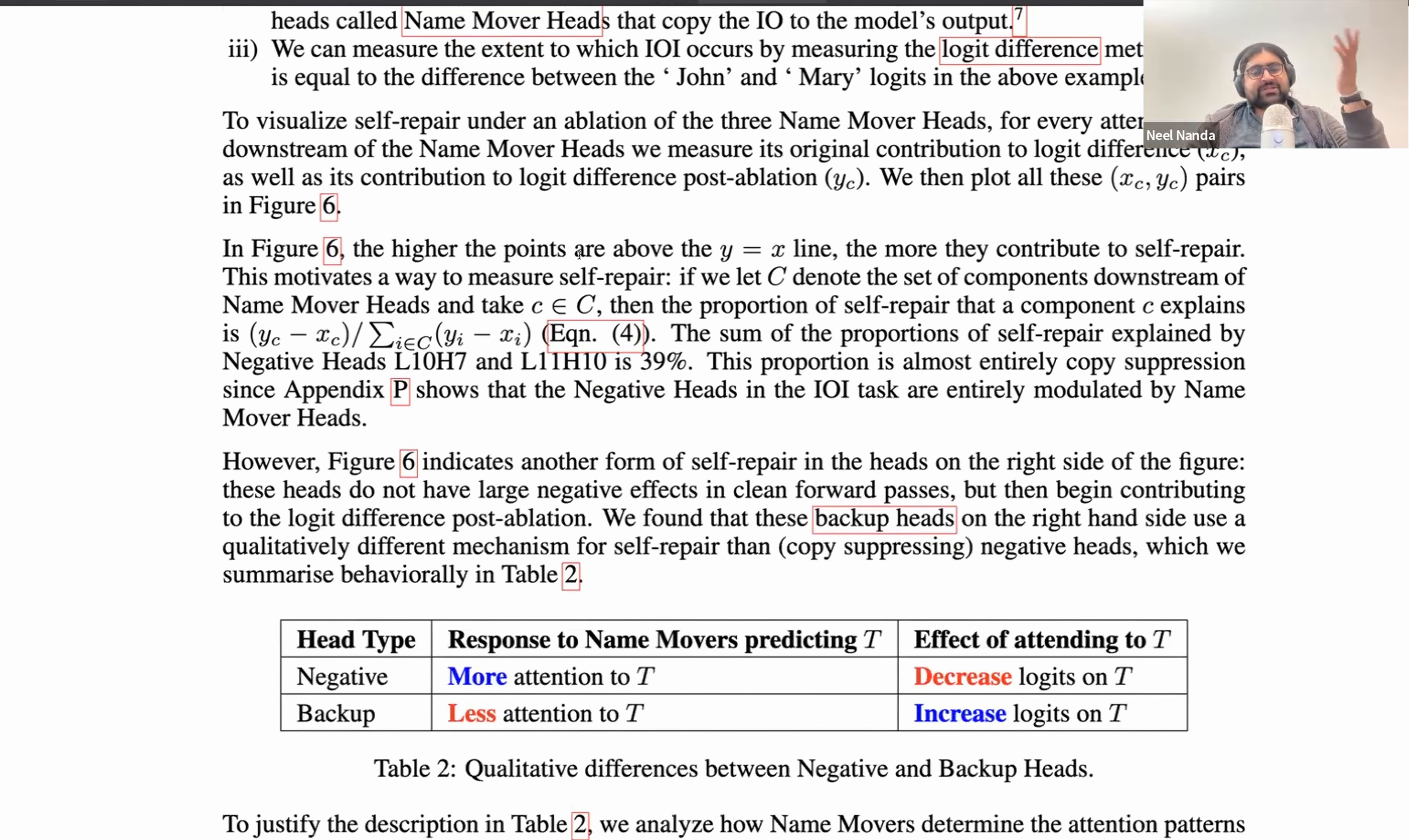Maybe let's disentangle that into two separate claims. The first is more of a behavioral claim. If you delete a name mover head and look at the total change on the output, it's not that big. Well, if you look at the direct effect of the head you deleted on the output, it is big. This is surprising. We can look at the direct effect because transformers have skip connections that skip layers. So you can just be like, if we just keep skipping layers and this head directly connects to the output, what happens?